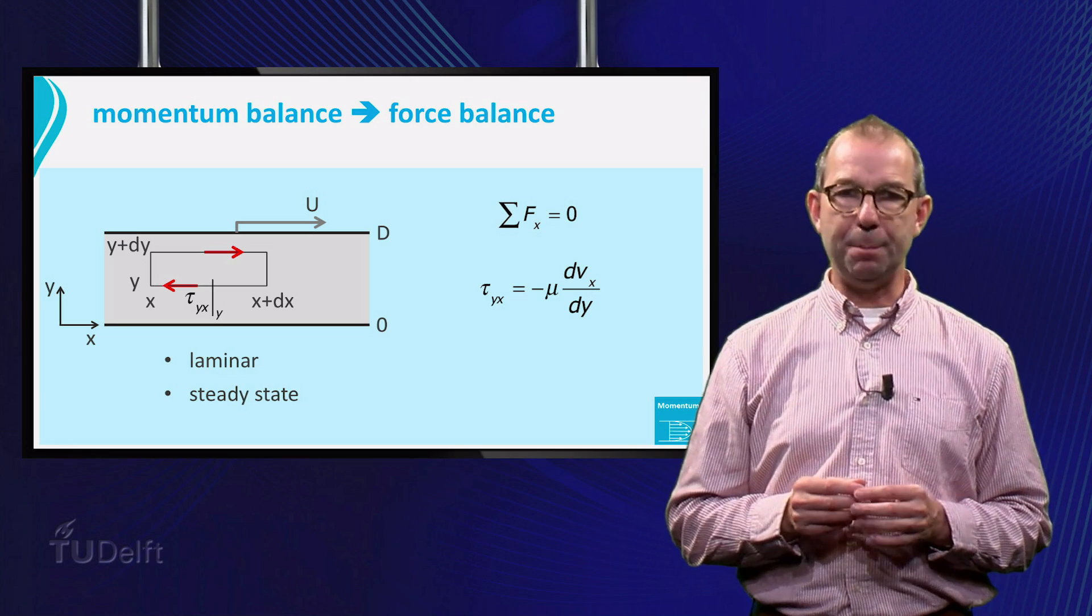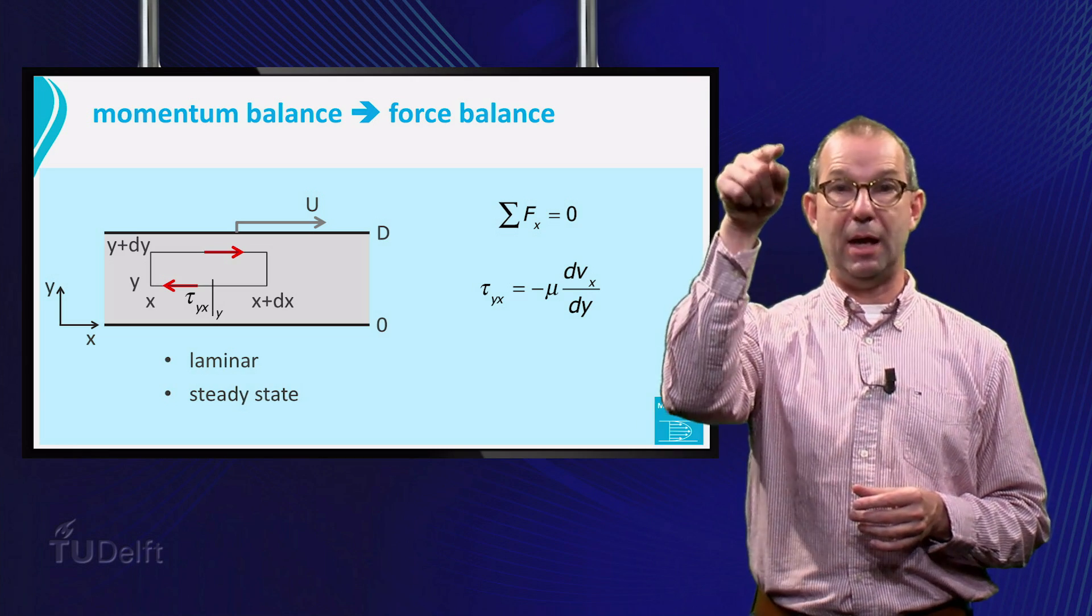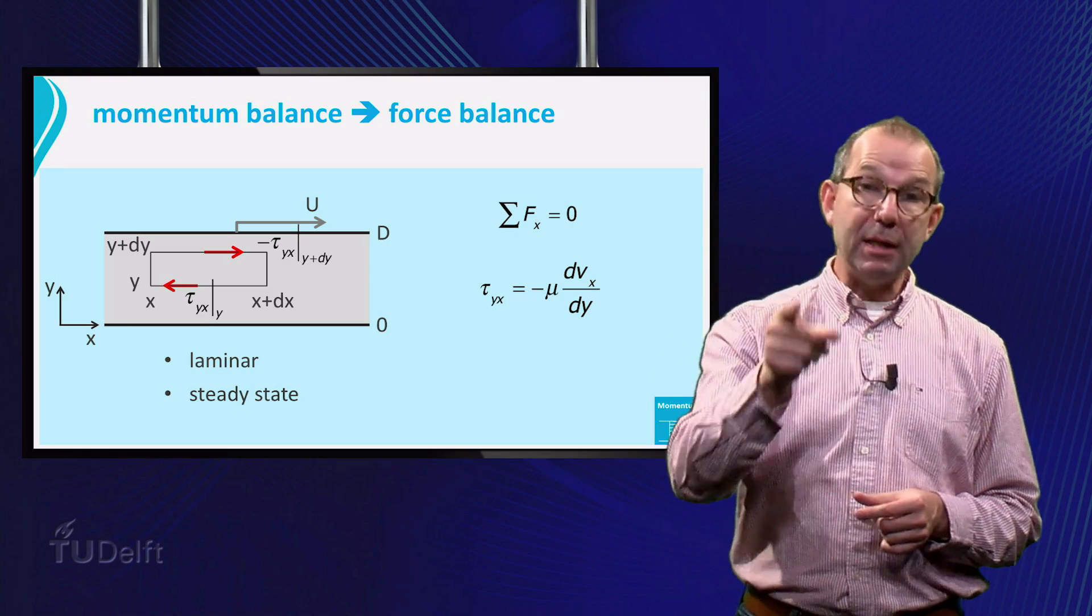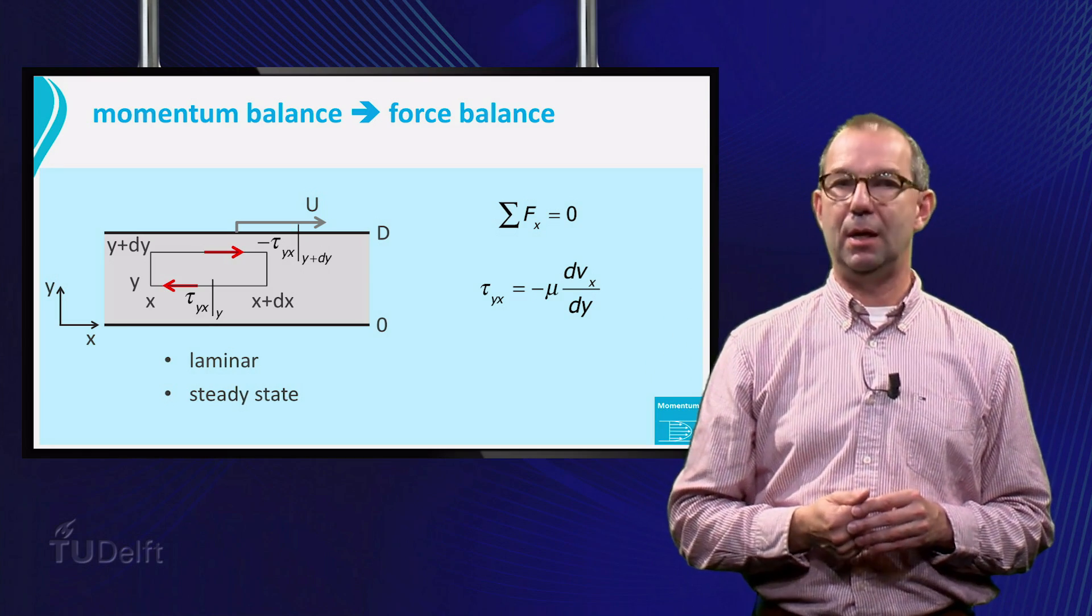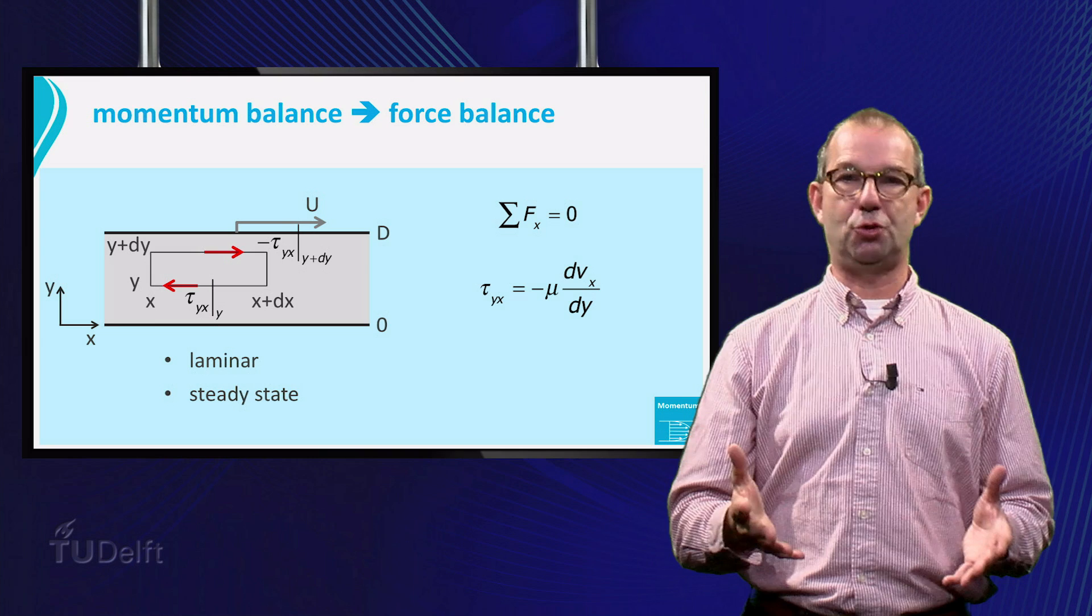Thus, at y plus dy, the top layer exerts a shear stress minus tau yx at y plus dy on our control volume.